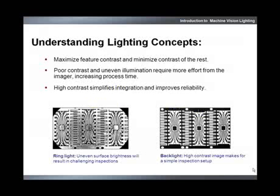Variations in part features will dictate what type of illumination is required. The goal is to maximize contrast on desired features and minimize it on the rest of the image. Lack of feature contrast results in greater processing time and effort. In this example on the left, we see how a ring light leads to varying contrast throughout the image and does not create any contrast on feature edges. On the right, we see how a backlight provides consistent contrast throughout the image and feature edges are clearly defined.